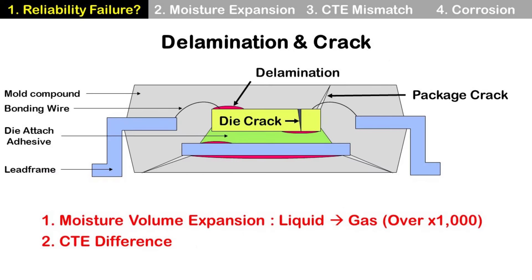The most common failures are delamination and crack, and those are related to the two major causes mentioned previously. First, volume expansion of moisture makes delamination and crack. Mold compounds absorb moisture, and when the package is exposed to high temperature, this moisture turns into vapor — the volume of liquid is increased more than 1000 times when it turns to vapor — then it makes delamination or crack.